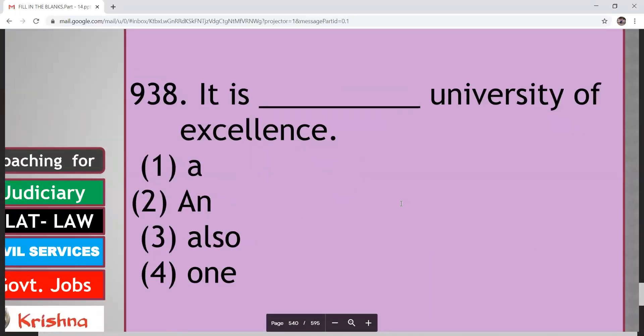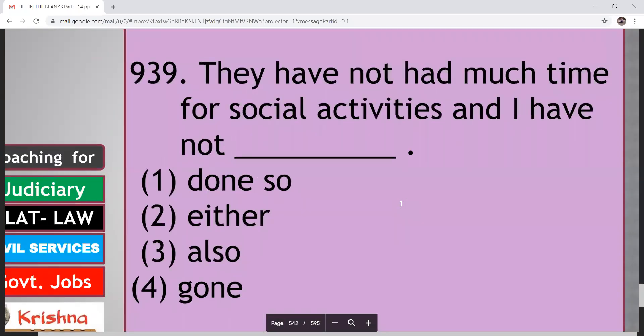It is dash university of excellence. A and also one. So what is your indefinite article? It's about university. When you say university, what is the sound? What is the consonant? So what will it use here? A use. It is a university of excellence. Next. They have not had much time for social activities and I have not dash. Done so, either, also, gone. So here it is a negative sentence that they don't have much time. So here answer is either. I have not either.